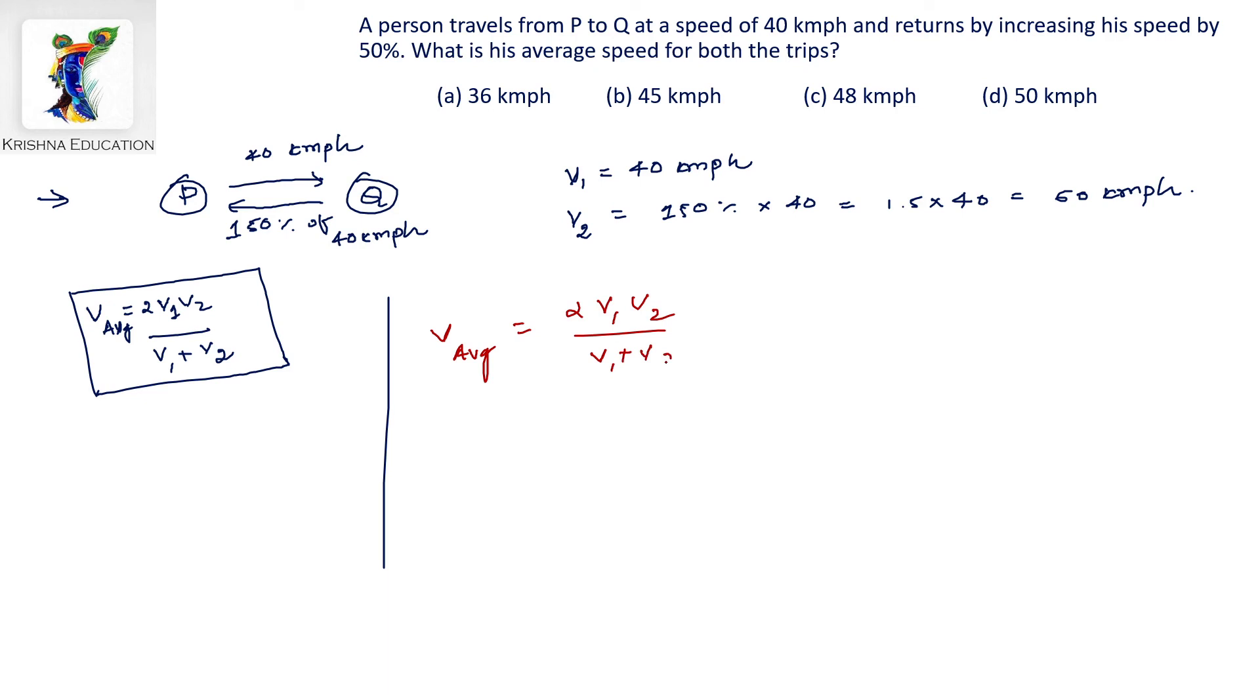Which is equal to 2 multiplied by 60 multiplied by 40 divided by 60 plus 40. If we simplify it, the answer will be 48 kmph.